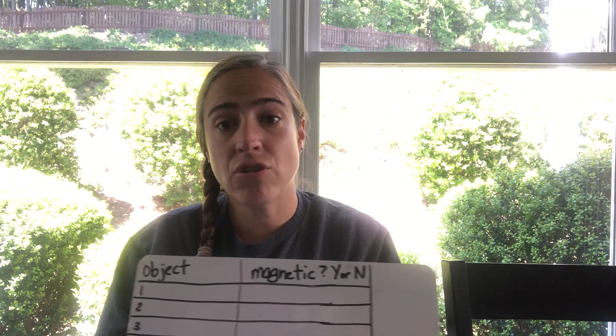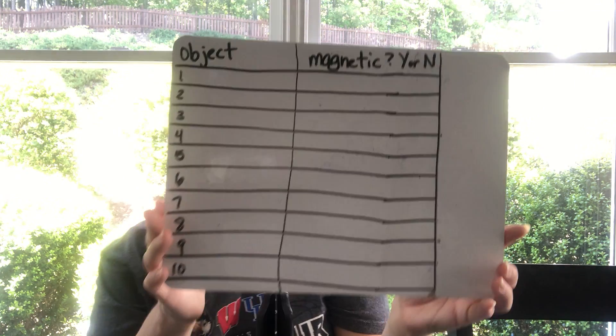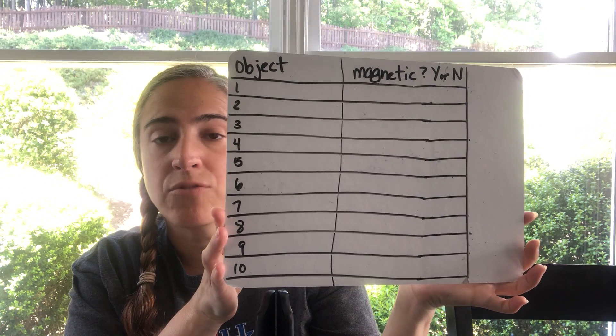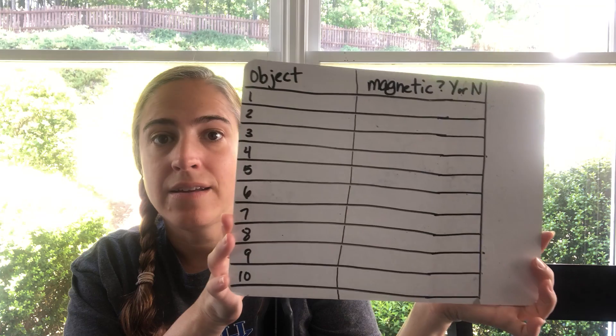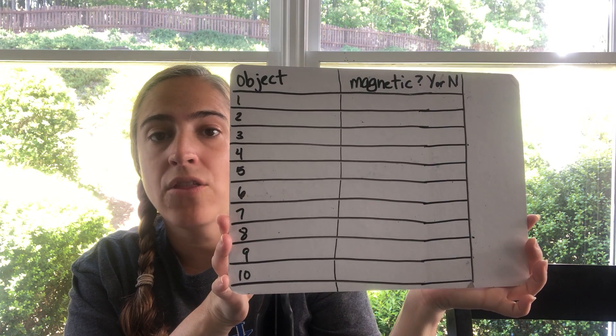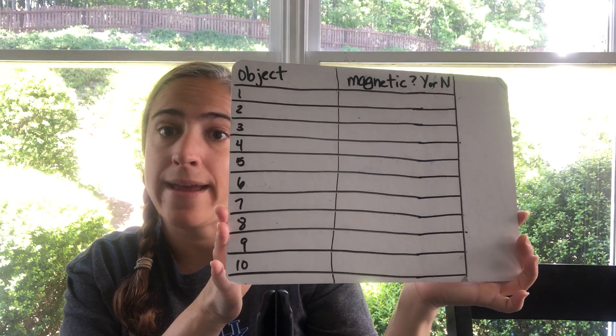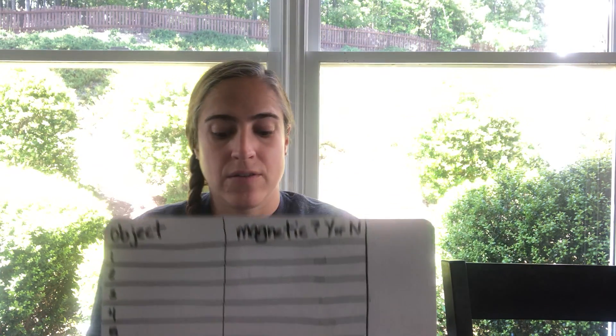Now you have your ten objects, a whiteboard or journal, and one or two magnets. On your whiteboard or in your journal, you need to make a chart where you can write down all your objects — I have ten here — and then in the other column write down 'magnetic?' with yes or no. You can pause the video to do that.